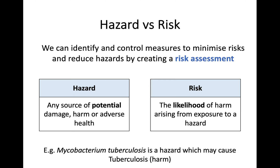When looking at the language of health and safety, there are two key terms to focus on: hazard and risk — often used incorrectly. Hazards are any source of potential damage or harm. In order to minimize the likelihood of these hazards harming you, we look at the risk. Risk is the likelihood of harm coming from exposure to a hazard, and how we control and minimize these risks is by creating a risk assessment.